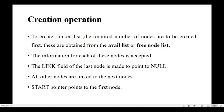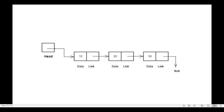Now let's look at the creation operation — how to create a linked list. For example, we want a linked list like this: the head, or start pointer, stores the address of the first node. The first node has data 10 and is linked to the second node. The second node has data 20 and is linked to the third node. The third node has data 30 and its link part is null, because it is the last node. The last node's address part is always null.